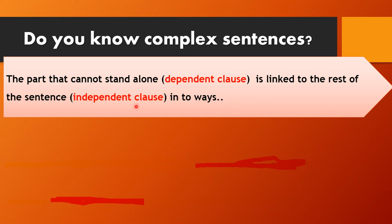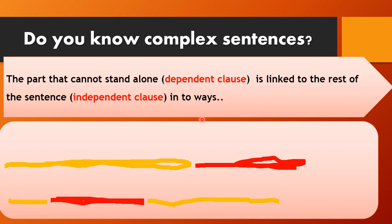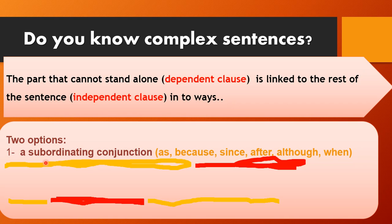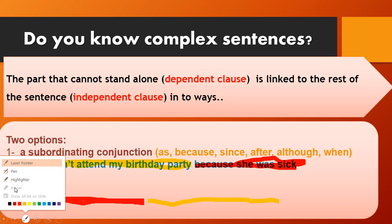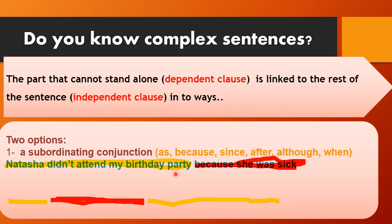The complex sentence has a part that cannot stand alone — that's the dependent clause — and it is linked to the independent clause. We can connect them in two ways. The first option is the subordinating conjunction, like: as, because, since, after, although, when. For example: 'Natasha didn't attend my birthday party because she was sick.' The first part is the independent clause; 'because she was sick' is the dependent one and depends on the first part to complete its meaning.